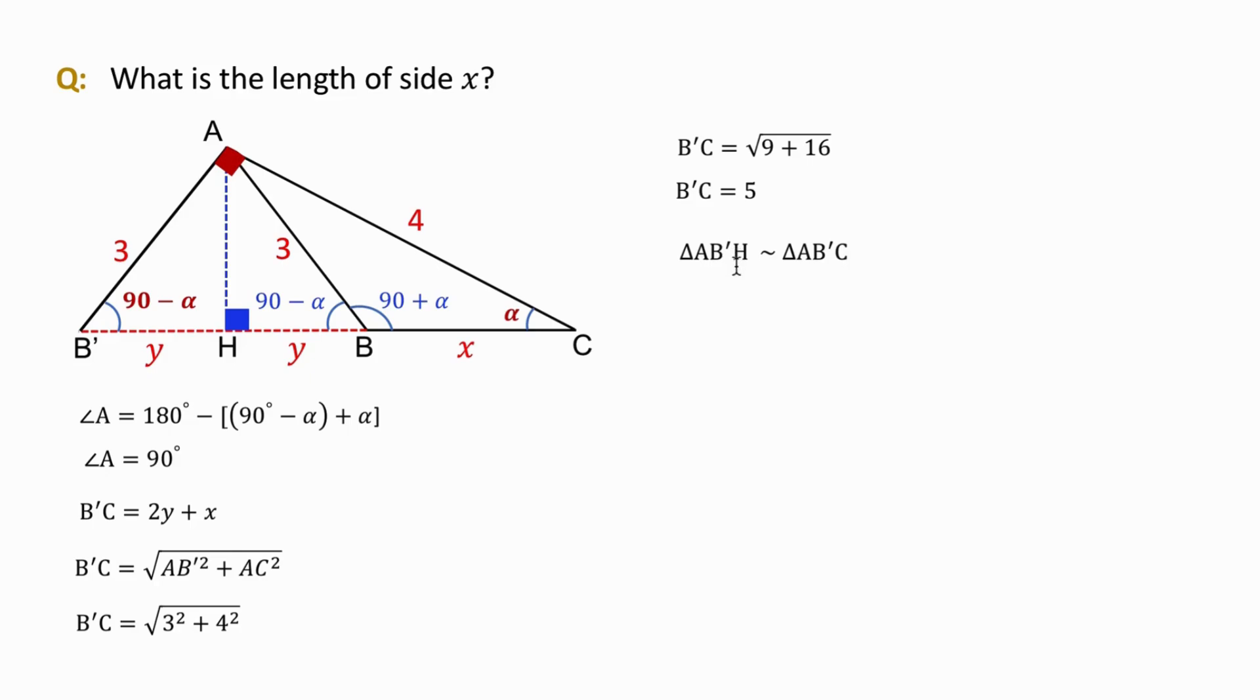Now, we apply the side angle side similarity between this green triangle, AB'C and blue triangle, AB'H. The triangles are similar by the corresponding hypotenuses, bases and included angle, that is 90 minus alpha. In other words, the two triangles are similar because they share the included angle 90 minus alpha at vertex B'. And the corresponding sides around that angle are proportional.